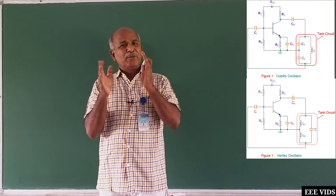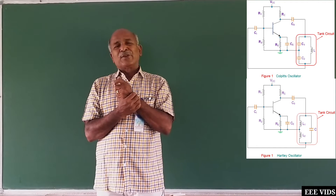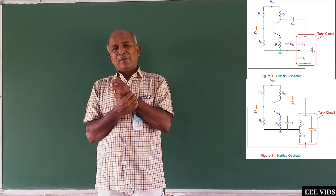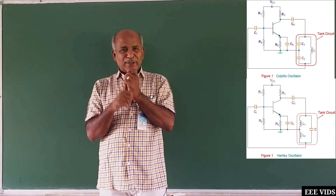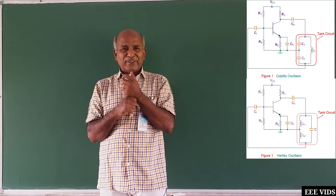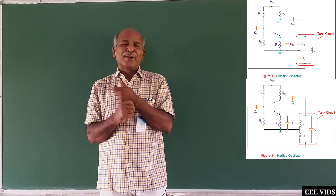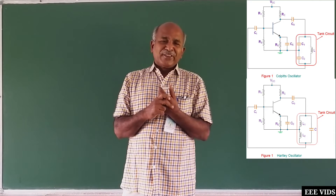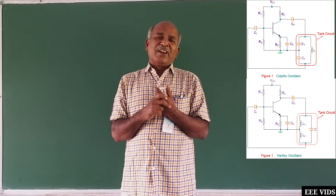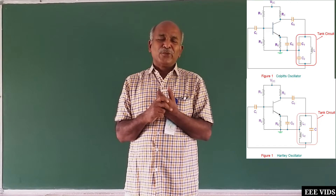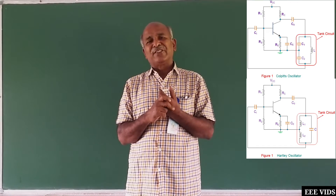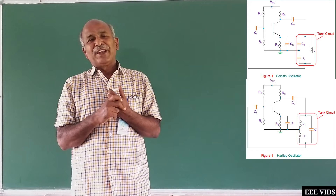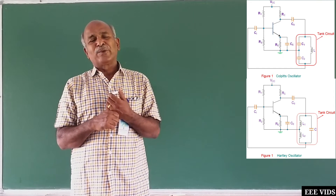There is a similarity between them. In the case of Colpitts — 'Colpitts' starts with C — so capacitors are used in the tank circuit. In the case of Hartley oscillator — 'Hartley' starts with H, and H is also the unit of inductance — so inductance is used in the Hartley oscillator.